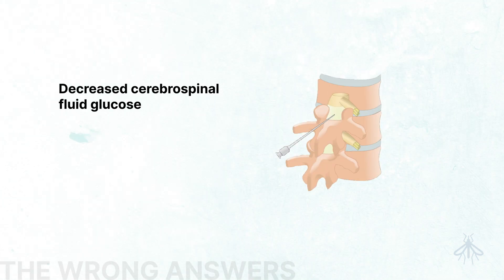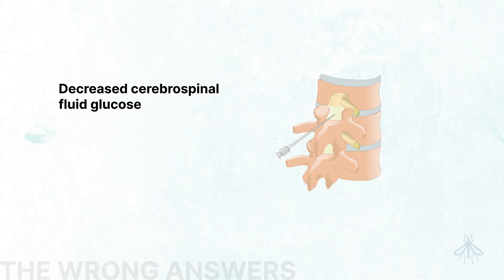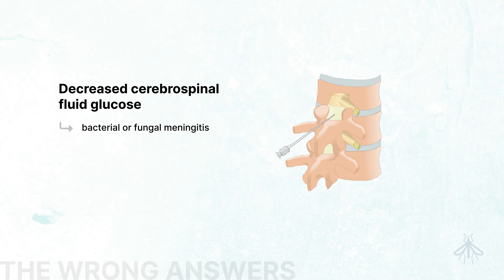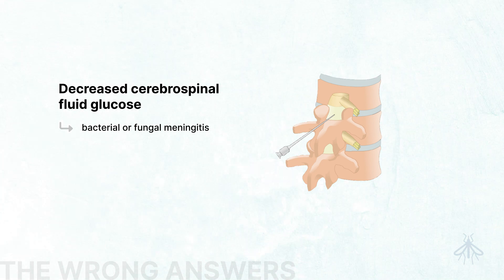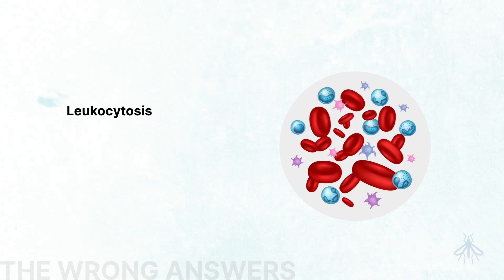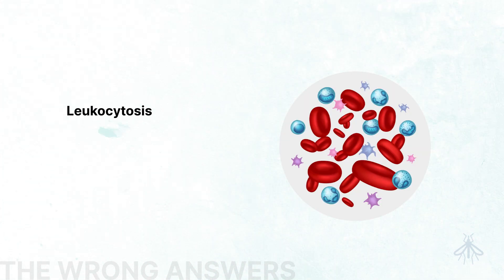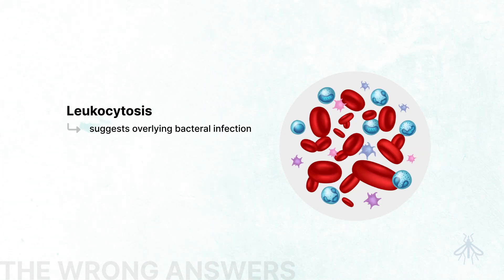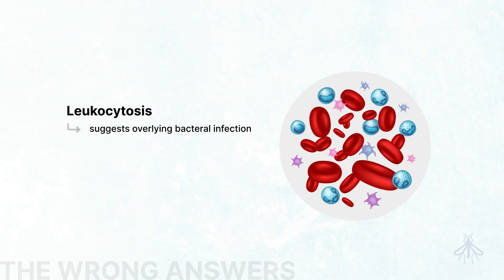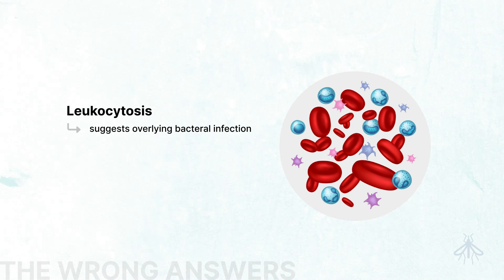Decreased cerebrospinal fluid glucose is typically found in patients with bacterial or fungal meningitis, but this value is generally normal in cases of viral meningitis. Leukocytosis in a patient with West Nile encephalitis suggests an overlying bacterial infection, in contrast to the leukopenia you typically see in cases of West Nile.